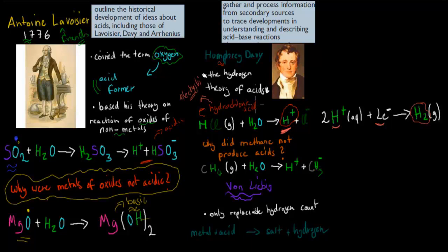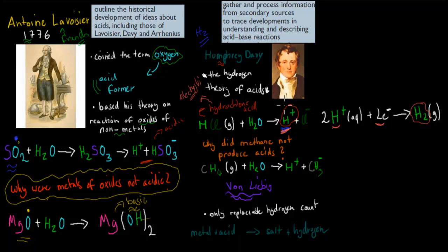After putting electricity through the solution, Davy realized hydrogen gas was being produced. He didn't connect the hydrogen ions — the H⁺ ions — to acidity. Instead, he concluded that the hydrogen molecules produced must be responsible for making things acidic, which we know is not true as they are actually neutral. So Humphrey Davy was more correct than Lavoisier, but he still had a flaw.